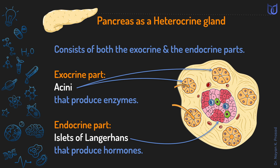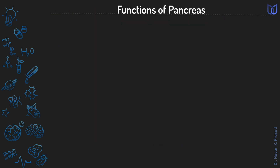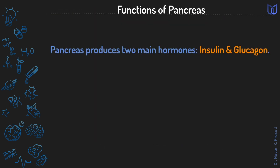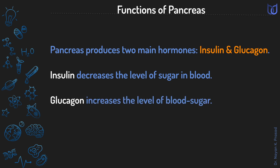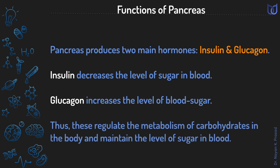The islets of Langerhans produce hormones. The two main hormones produced by the pancreas are insulin and glucagon. Insulin decreases the level of sugar in blood, while glucagon increases the level of sugar in blood. These two hormones regulate the metabolism of carbohydrates in the body and maintain the blood sugar level.